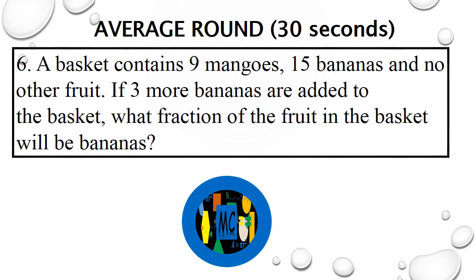Question 6. A basket contains 9 mangoes, 15 bananas and no other fruit. If 3 more bananas are added to the basket, what fraction of the fruit in the basket will be bananas? Go! Question 6. A basket contains 9 mangoes, 15 bananas and no other fruit. If 3 more bananas are added to the basket, what fraction of the fruit in the basket will be bananas? Go!